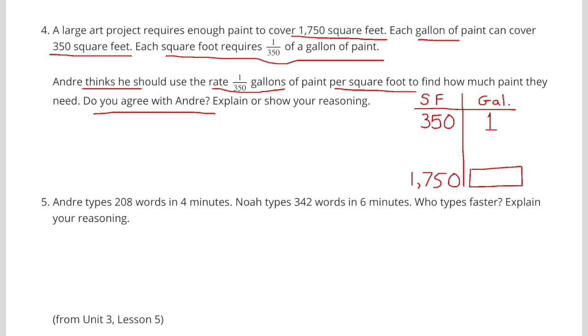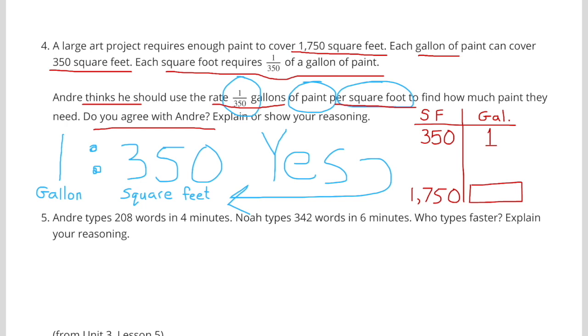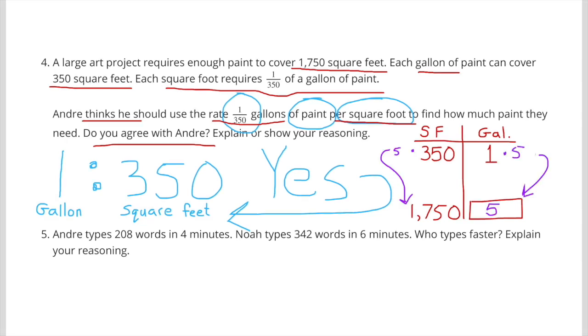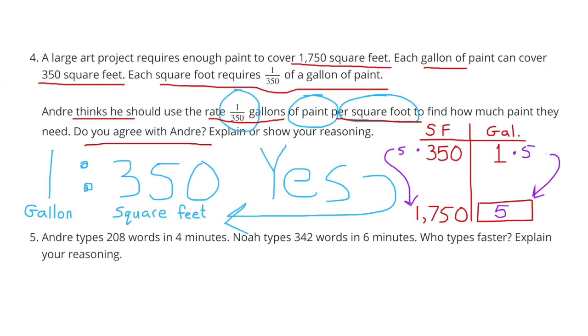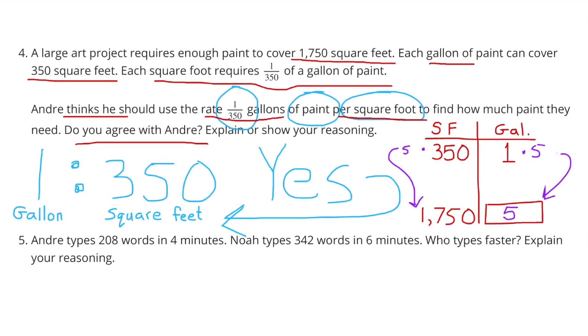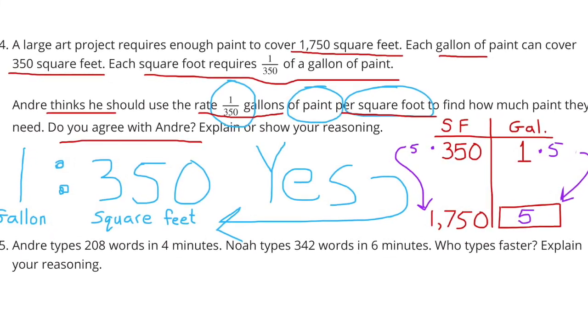One gallon of paint for every 350 square feet. So 1 over 350. 1 would represent gallons. 350 would represent square feet. On my chart, I put 350 square feet on the left, and I put the gallon on the right. For every one gallon, the paint covers 350 square feet. For an unknown number of gallons, it's going to cover 1,750 square feet. They just asked a simple question. Do you agree with Andre? Yes, 1 to 350 is the ratio of gallons of paint per square feet. And now to finish out this chart, I'm going to multiply 1 gallon by 5 gallons and 350 by 5, since 350 goes into 1,750 five times. So it would take a total of 5 gallons to do the job and cover 1,750 square feet.